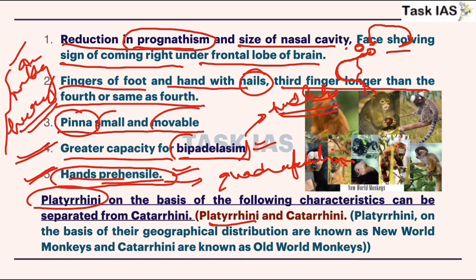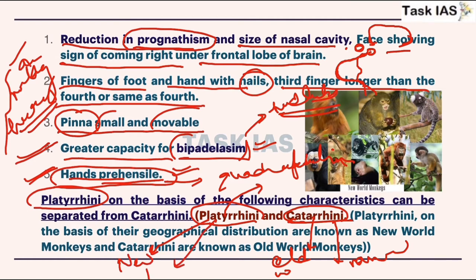I have discussed two terms: platyrrhini and catarrhini. Catarrhini means old world monkeys — narrow nose. Platyrrhini means new world monkeys and their nose is very broad. From a geographical definition, catarrhini are associated with Asia and Africa, while platyrrhini are associated with South America. This shows how new world monkeys migrated from old world monkeys.